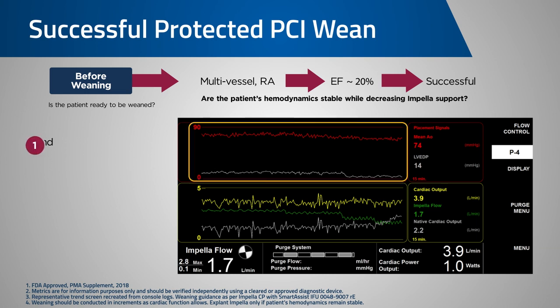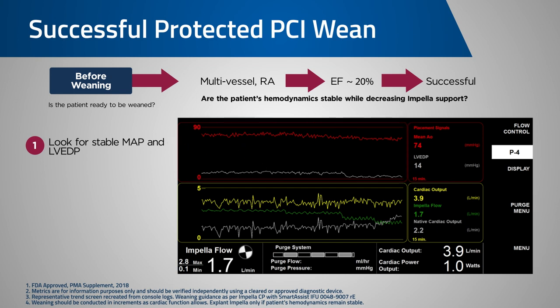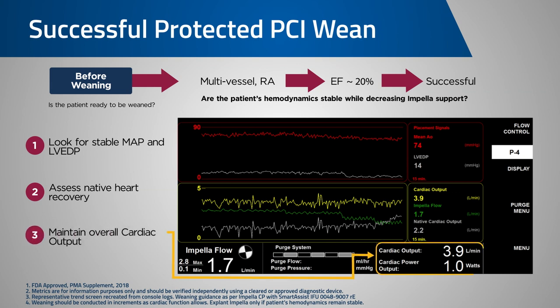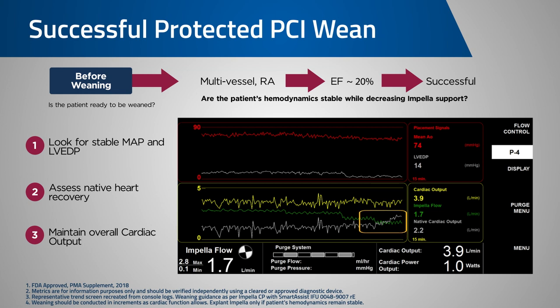First, observe that the mean arterial pressure and LVEDP trend lines are stable. Next, we see that the native cardiac output is increasing as the Impella flow is decreasing. And finally, the total cardiac output remains stable. In this case, the native cardiac output crossing and overtaking the Impella flow trace while the overall cardiac output remains stable is a good indication that the patient is tolerating the reduction in support. This should be validated with other diagnostic devices.